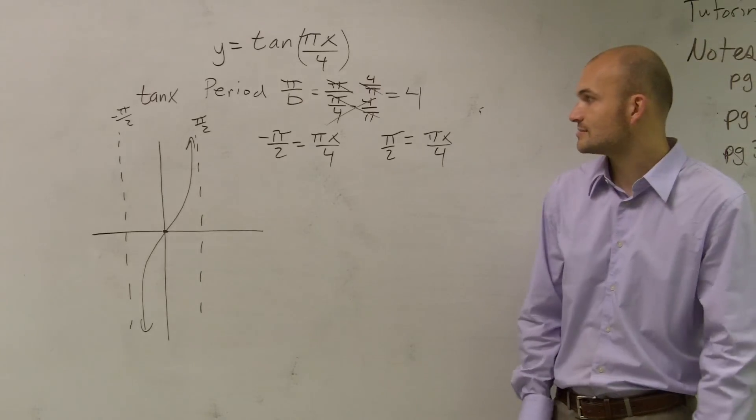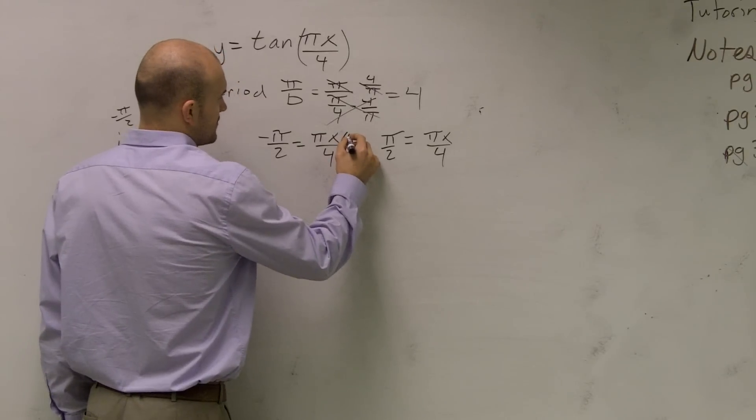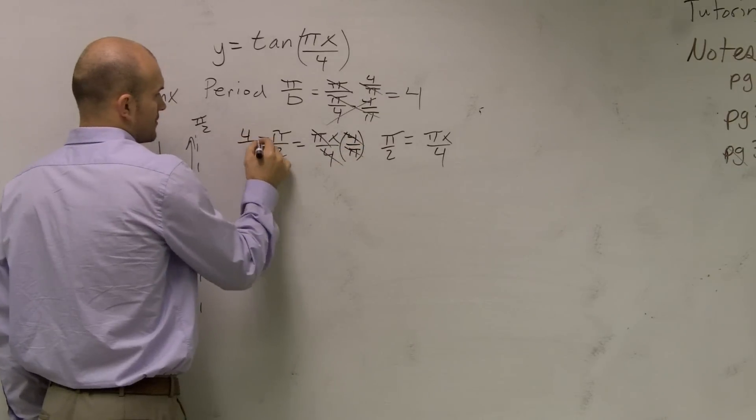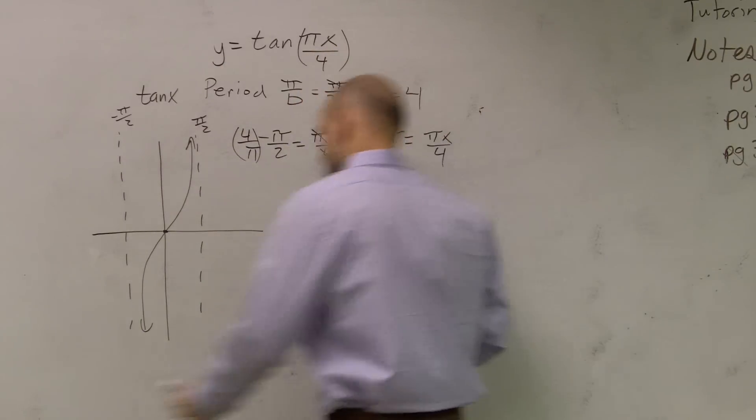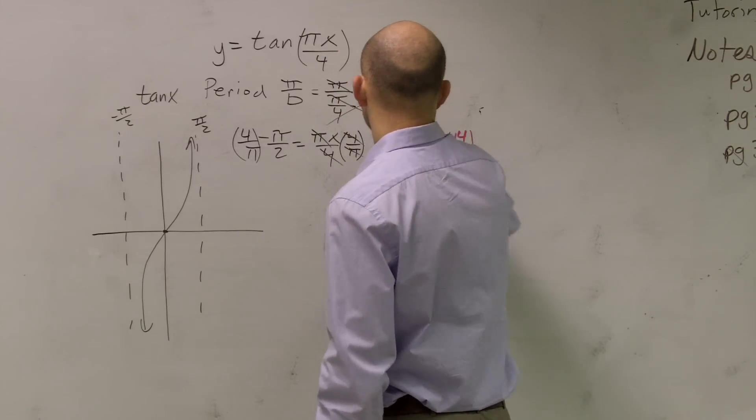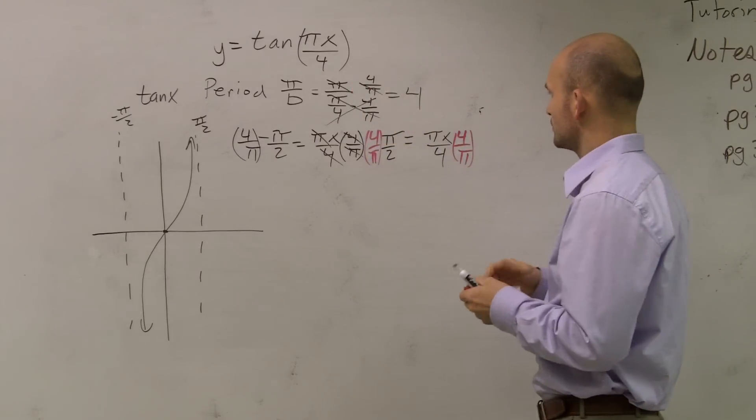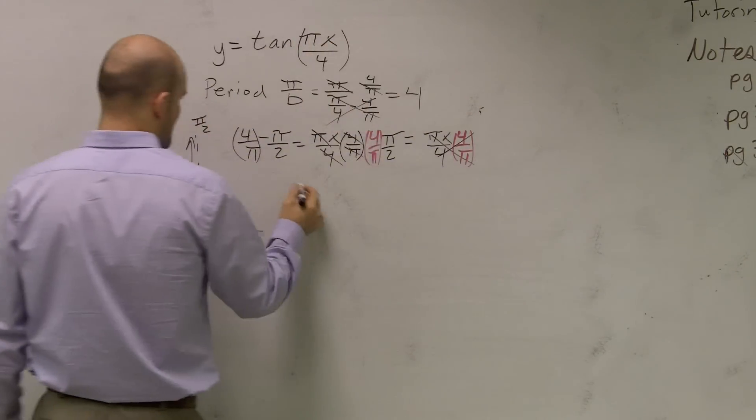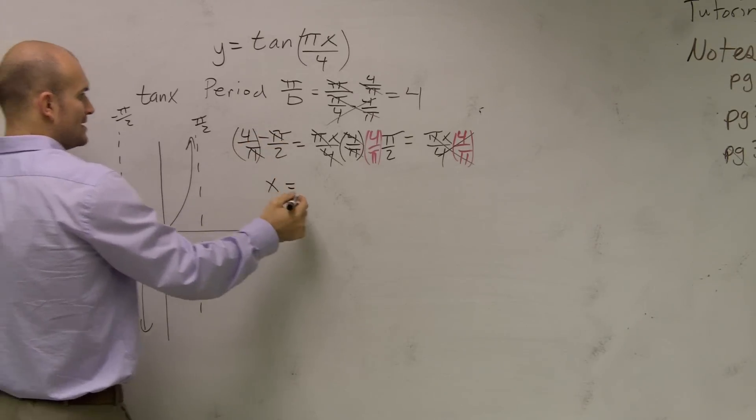Now we solve for x. I'll multiply by the reciprocal to get rid of that, so those cancel out. Multiply by the reciprocal here. These cancel out, and that gives you -2.